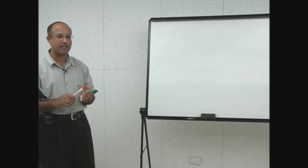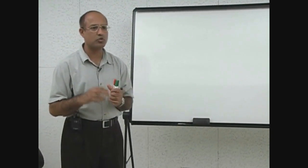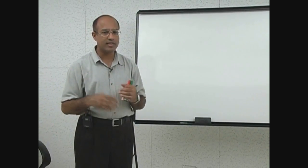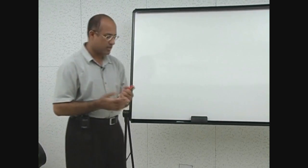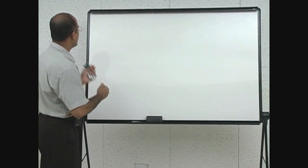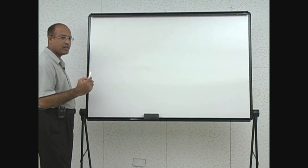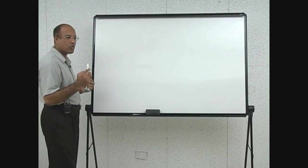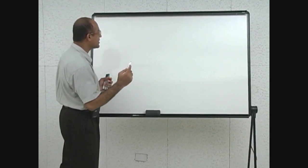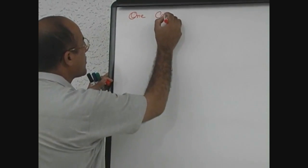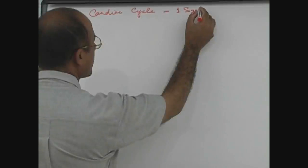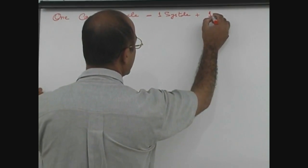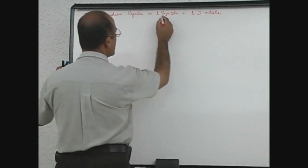Today we will be talking about the cardiac cycle. We will discuss it in two fashions: first by doing different diagrams, and in the second phase by presenting the events during the cardiac cycle graphically. All the events which occur during one cardiac cycle means all the mechanical events which occur during one systole and one diastole. One cardiac cycle is equal to one systole plus one diastole. Systole means contraction and diastole means relaxation.